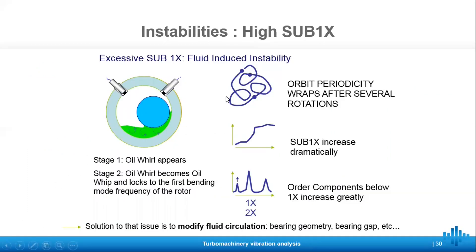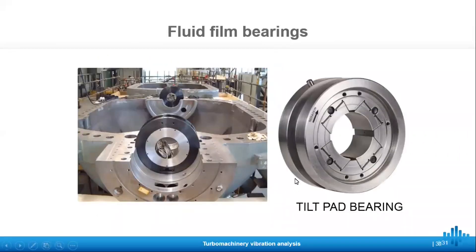Regarding the sub-1x or subharmonics, if we have any fluid instability, we can notice two stages. Stage 1 is where the oil whirl appears, and stage 2 is where it becomes an oil whip and locks the first bending mode to the frequency of the rotor. The consequence will be a complex orbit, and the sub-1x will increase dramatically. In the order spectrum, we will be able to see the order components increase as well. A solution could be to modify the fluid circulation, possibly by changing the bearing geometry — an example of this being done can be seen in the tilt pad bearing, which consists of pads that are free to tilt, allowing the oil to create a self-sustaining film.